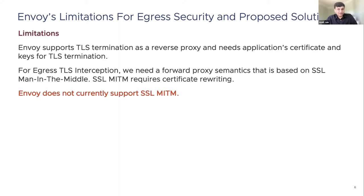That's where OnWise's limitations come in. OnWise does support TLS termination, but it supports it as a reverse proxy semantic and can terminate TLS traffic if it has the application's certificate and key. For egress TLS interception, we need a forward proxy semantic based on SSL man-in-the-middle. OnWise currently does not support SSL man-in-the-middle, and in the longer term, the right approach would be to enhance OnWise to support egress TLS inspection with built-in SSL interception.